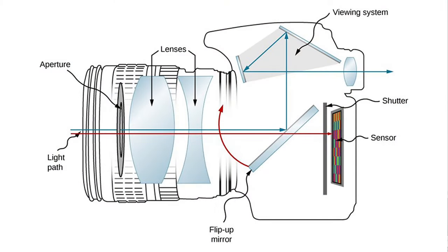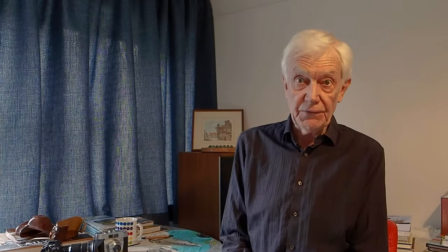An aperture is the size of the iris inside the camera lens, and that size is variable — it can be larger or smaller. A shutter speed is the length of time it remains open, from a fraction of a second to perhaps many seconds. But shutter speeds and apertures do far more than give you a correctly exposed image. This is something we shall see later on.